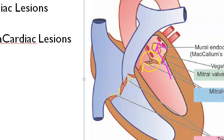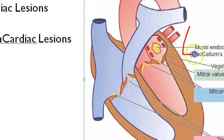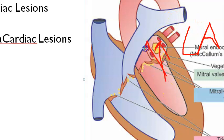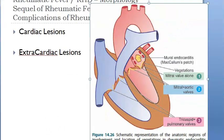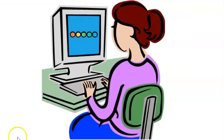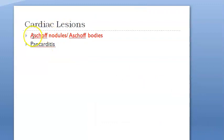Because of vegetations on the mitral valve, there can be regurgitation of blood from the left ventricle back to the left atrium — mitral regurgitation. This causes McCallum's patch, which is a mural endocarditis found on the left atrium wall, due to the blood flowing back from the left ventricle to the left atrium.